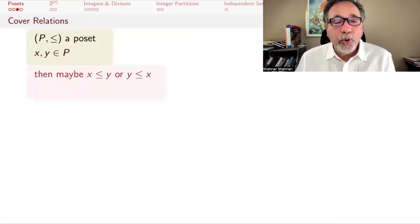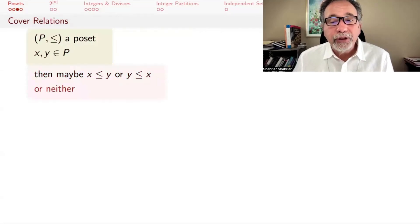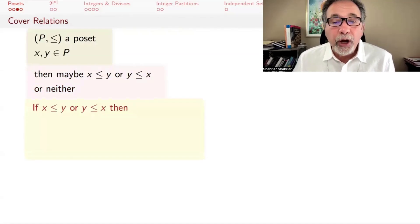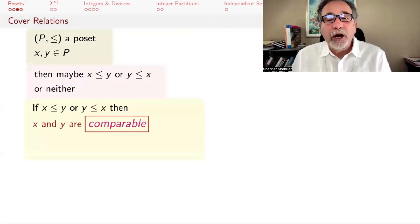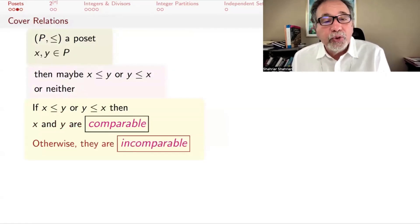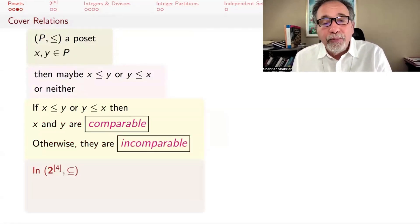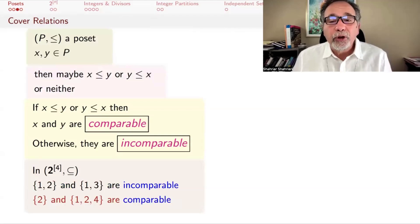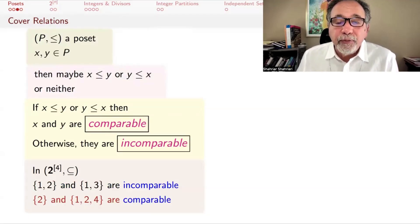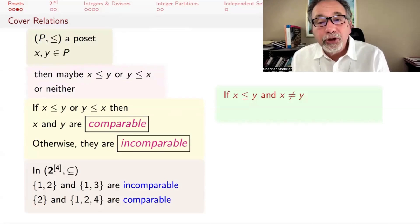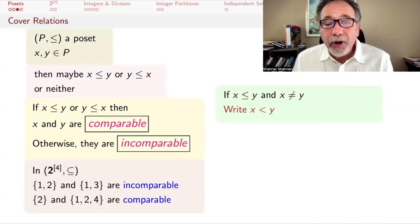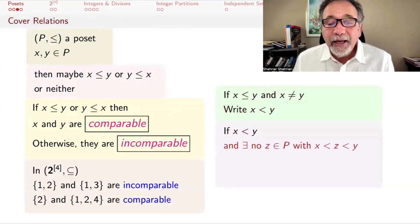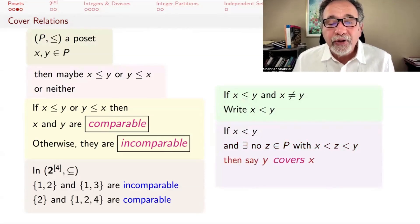In a poset, it's possible that X ≤ Y or Y ≤ X, but it's also possible that neither holds. If X ≤ Y or Y ≤ X, then X and Y are comparable. If not, they're incomparable. In the Boolean lattice, for example, {1,2} and {1,3} are incomparable — neither is a subset of the other — whereas {2} and {1,2,4} are comparable because {2} is a subset of {1,2,4}. If X ≤ Y but they're not the same, we write X < Y. If X < Y and there's no Z between them — no Z greater than X and less than Y — then we say Y covers X.